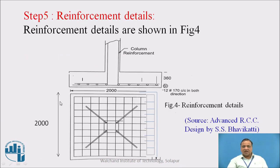This is the reinforcement arrangement. The main steel and the perpendicular direction steel are both main steel, because it is a two-way cantilever. So both are 12 mm HYSD (tor) bars at 170 mm center to center, both ways.